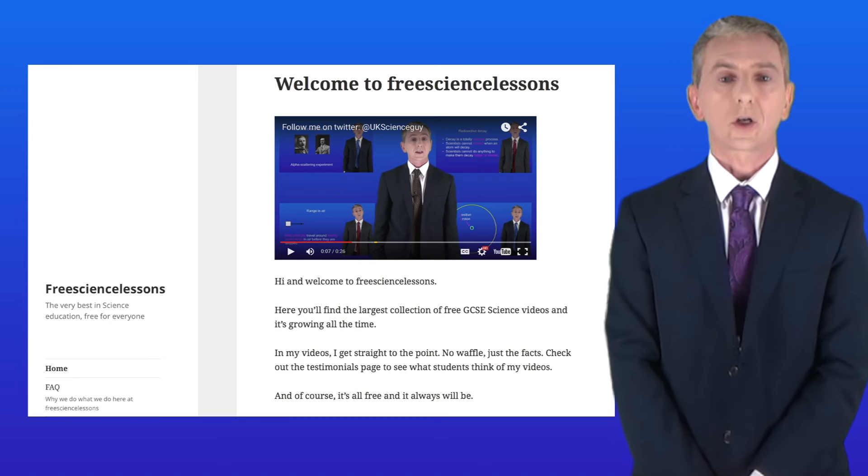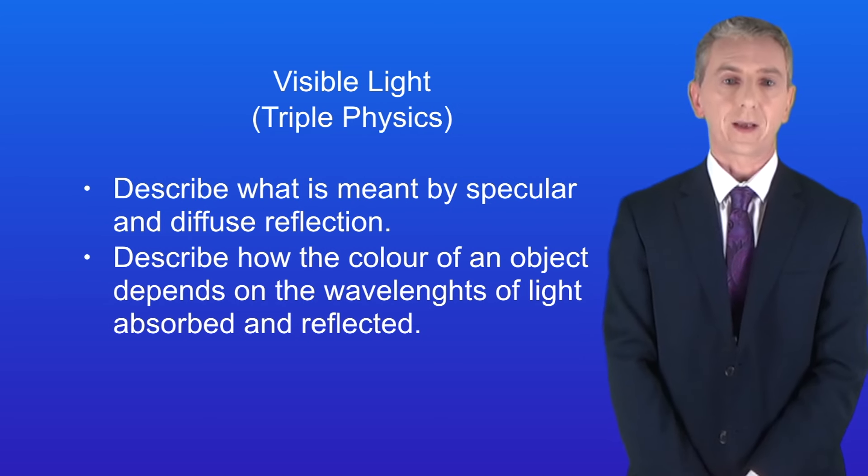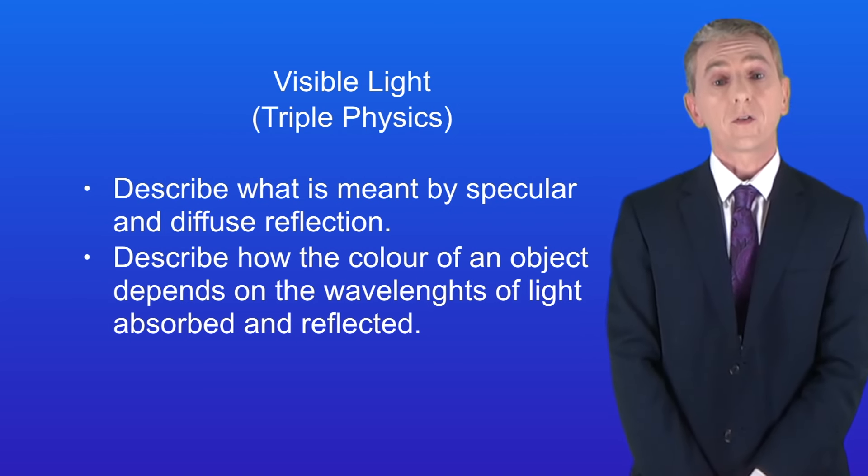Hi and welcome back to freesciencelessons.co.uk. By the end of this video you should be able to describe what's meant by specular and diffuse reflection. You should then be able to describe how the color of an object depends on the wavelengths of light absorbed and reflected, and this is for triple physics students only.